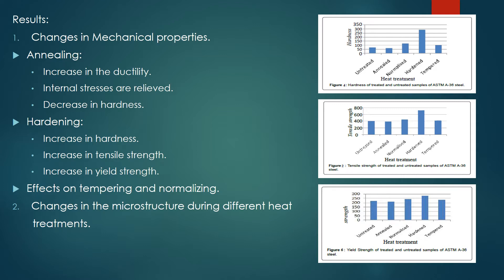Next is the hardening process. As the name suggests, there is an increase in hardness, because of the quick cooling rate. The carbon content doesn't get enough time to react with the oxygen, so it gets trapped inside and forms martensite. We can also see that there is a noteworthy increase in the tensile strength and yield strength in the hardening process.